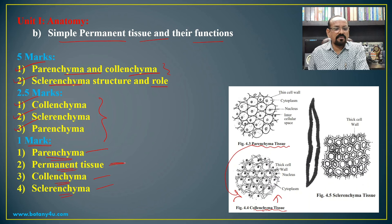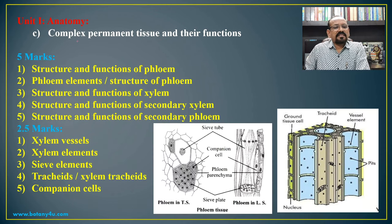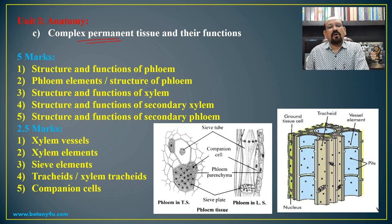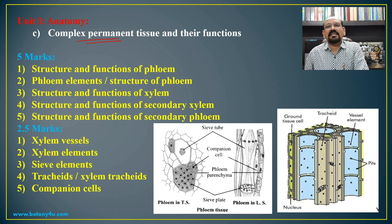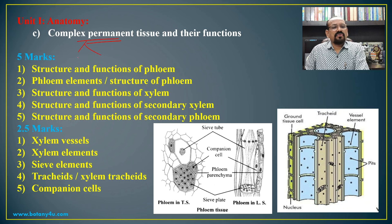There is also a question on permanent tissue for 5 marks and 2.5 marks. The difference between simple and complex tissues: tissues in which cells are of the same structure are simple tissues, while tissues with cells of different structure are complex tissues. Complex tissues are of two types: phloem and xylem.